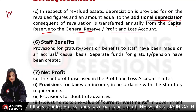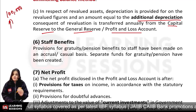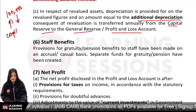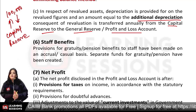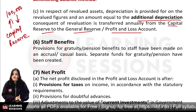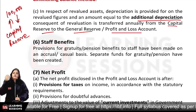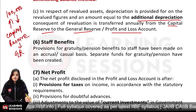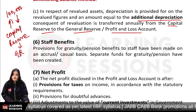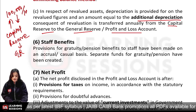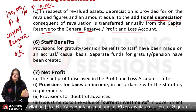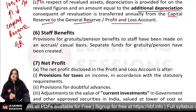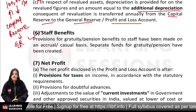Then the depreciation method is disclosed. The revaluation gain is transferred to capital reserve, and additional depreciation is charged for the revalued machine. For example, if a machine had a gain of 10,000 in revaluation 10 years ago, the additional depreciation on that revalued portion is transferred from capital reserve to general reserve. We will tell this policy — we follow this policy.